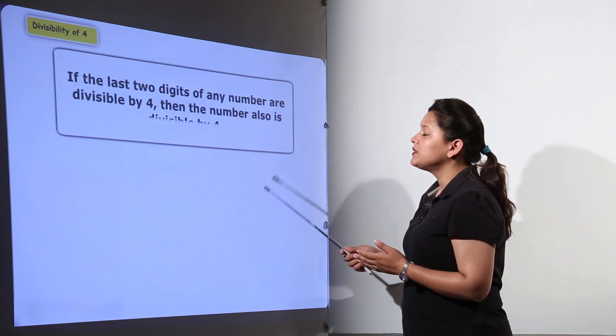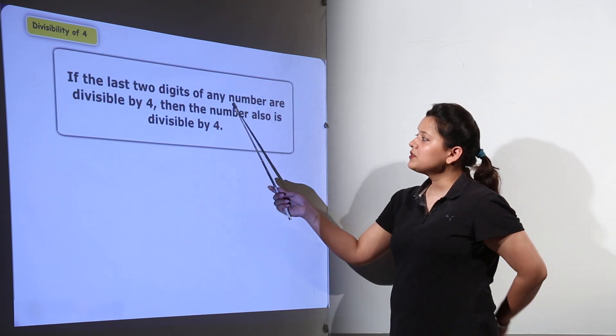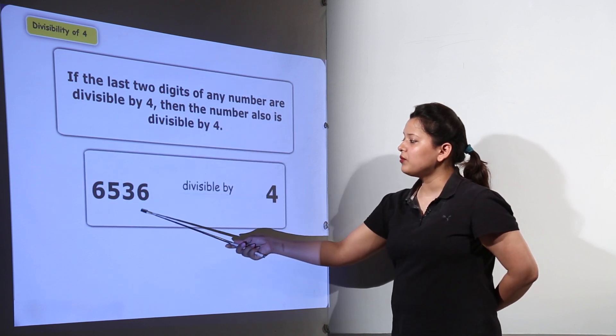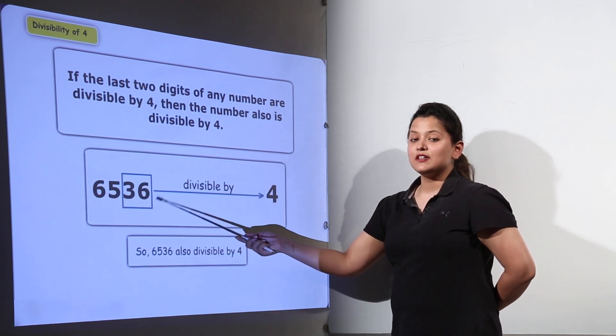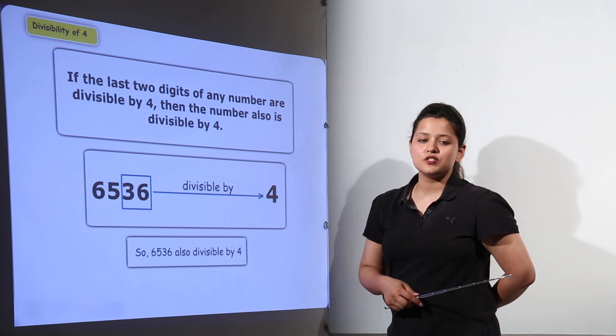Next, we have divisibility by 4. If the last two digits of a number are divisible by 4, as in this case, the whole number will be completely divisible by 4.